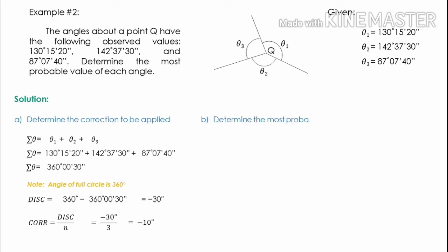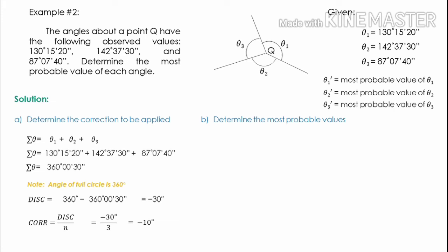After determining the correction, we can now determine the most probable value of each angle. θ1 prime is the most probable value of θ1. θ1 prime equals θ1 plus or minus the correction. Since the correction is negative, we subtract: 130 degrees 15 minutes 20 seconds minus the correction of 10 seconds gives us 130 degrees 15 minutes and 10 seconds — the most probable value of θ1.